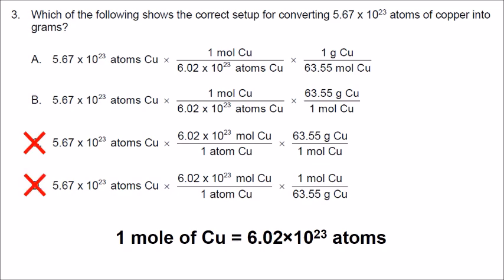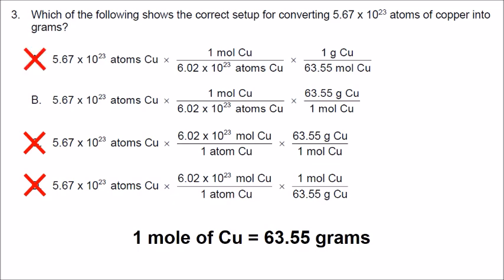Moving on to the second step, we know from the periodic table that there are 63.55 grams in one mole of copper. Choice A says 1 gram of copper equals 63.55 moles — that's backwards and incorrect, so we eliminate choice A. The correct answer is B.